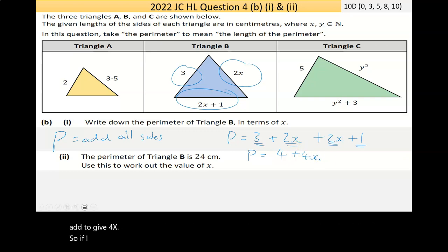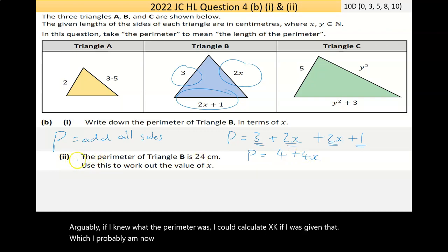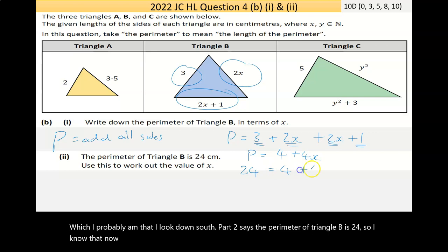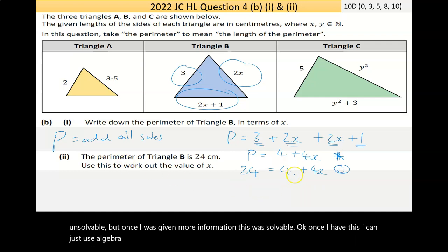So if I know what X is, I can calculate the perimeter. Now, arguably, if I knew what the perimeter was, I could calculate X, which I probably am now that I look down. Part 2 says the perimeter of triangle B is 24. So I know that that now is 24. Remember, you can only solve an equation of 1 unknown. So this was unsolvable. But once I was given more information, this was solvable.